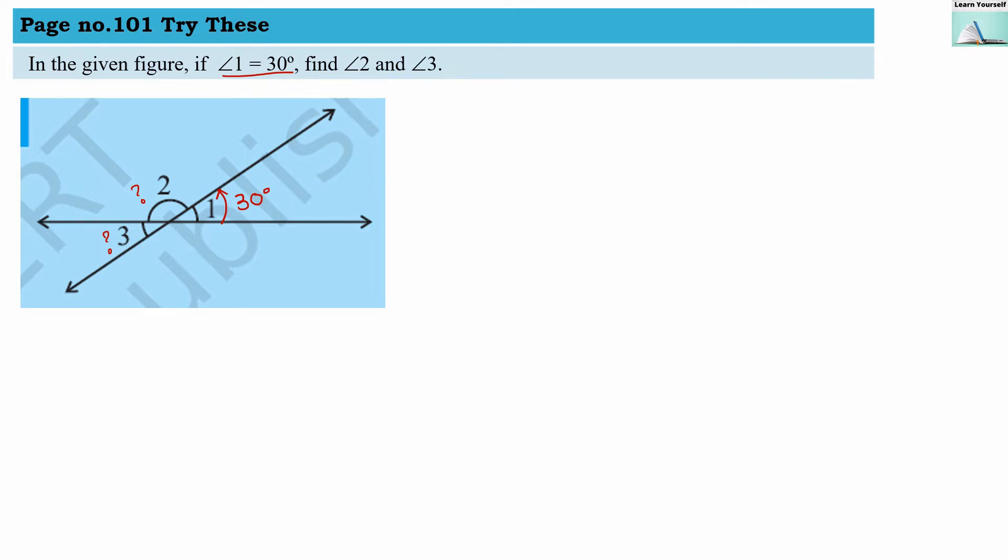We can say that angle 1 will be equal to angle 3, and what is the reason for that? Because they are vertically opposite angles. As they are vertically opposite angles, their measures are similar, and because of that, angle 3's measure is also 30 degrees.